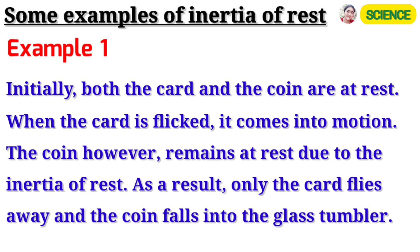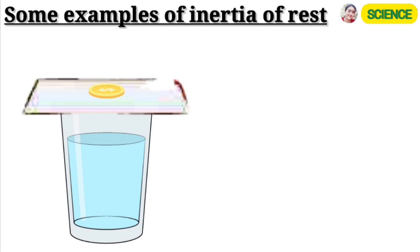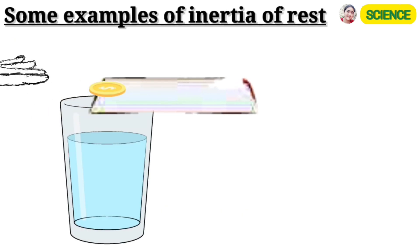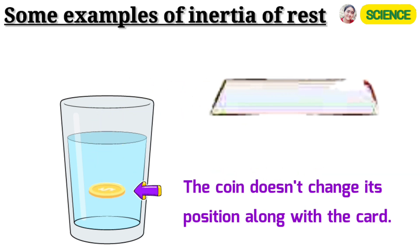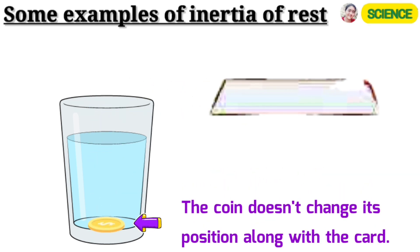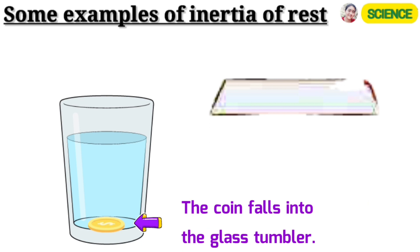Example 1: Both the card and the coin are at rest. When the card is flicked, it comes into motion. The coin, however, remains at rest due to the inertia of rest. As a result, only the card flies away and the coin falls into the glass tumbler.